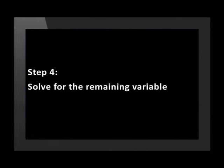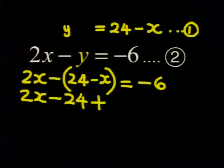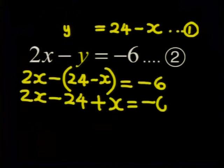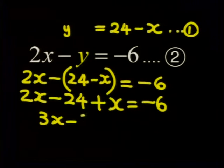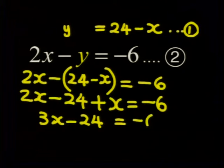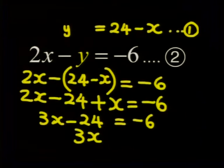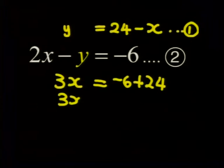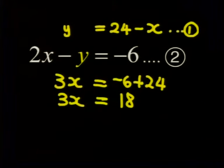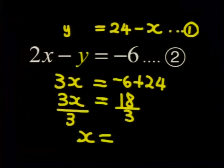And this is our fourth step: We just solve for the remaining variable. Okay, 2x minus 24 plus x equals minus 6. So we simplify: 2x plus x gives me 3x minus 24 equals minus 6. Now we want to keep the x on one side so we get 3x equals minus 6 plus 24. We get 3x equals 18. Dividing by 3 on both sides, we get x equals 6.